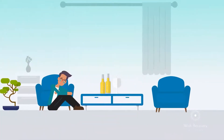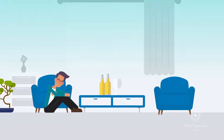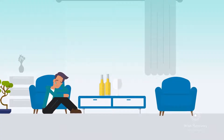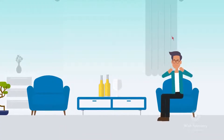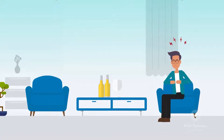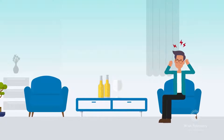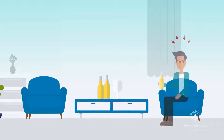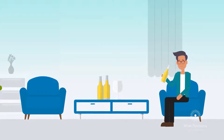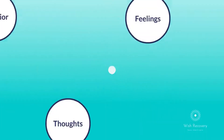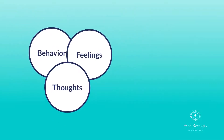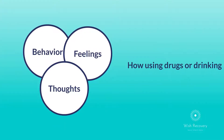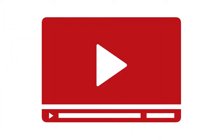Triggers can cause us to react emotionally or behaviorally. For example, triggers can lead us to feelings of anxiety or anger, or cause us to act out, drink, or use drugs in response. Chain analysis can help you identify triggers and see how using drugs or drinking functions and serves you. This video will walk you through the process.